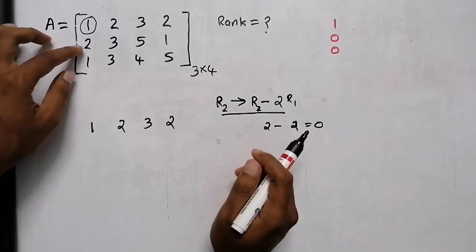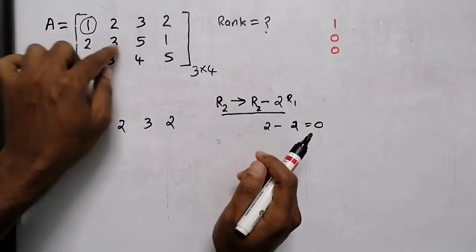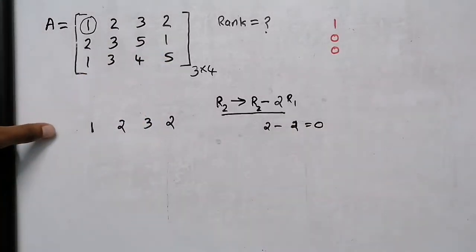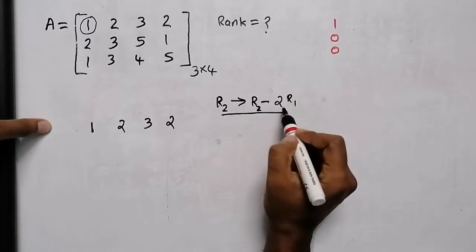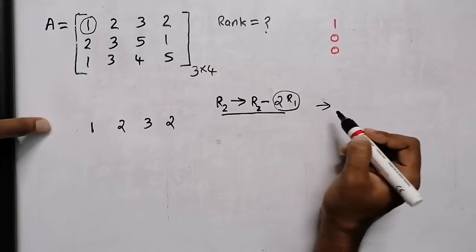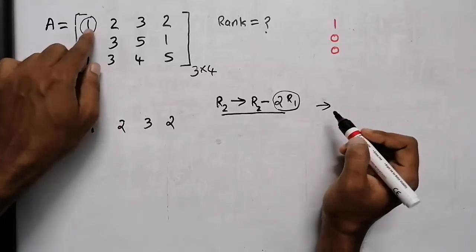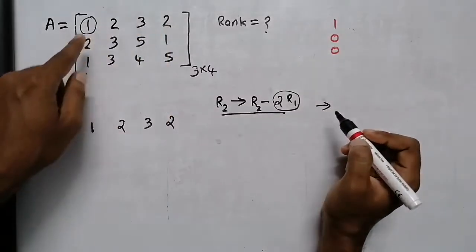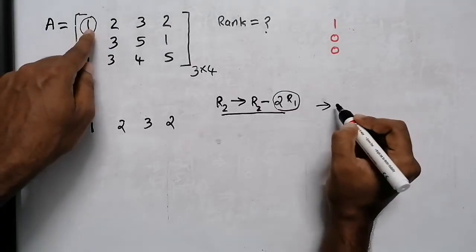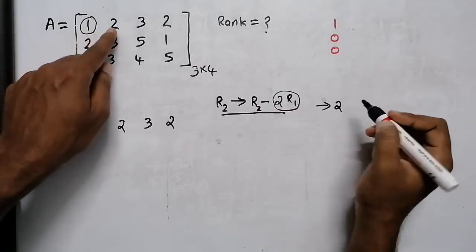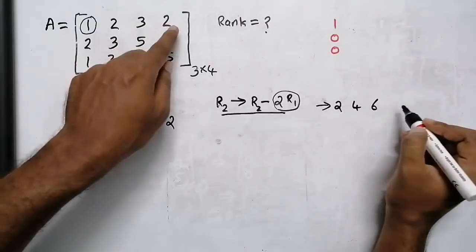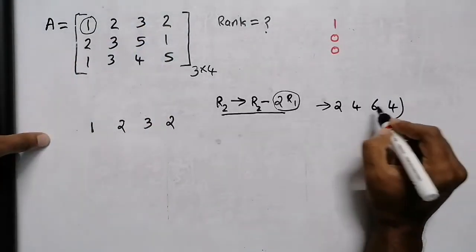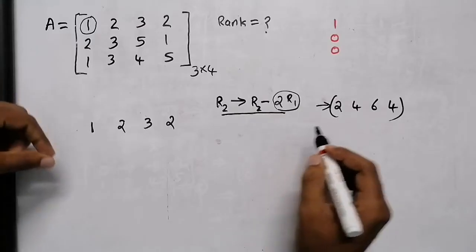We have to use this element. This row is full. Now we have 2R1 here. 2R1 is here. 1x2 is 2. 2x2 is 4. 3x2 is 6. 2x2 is 4.